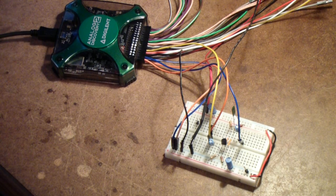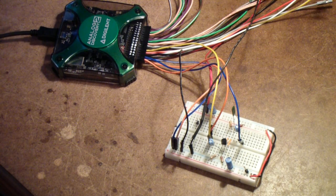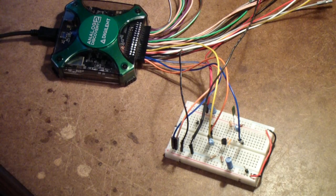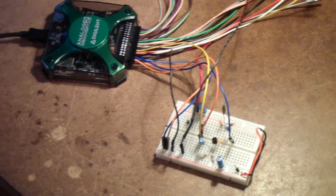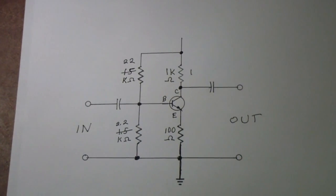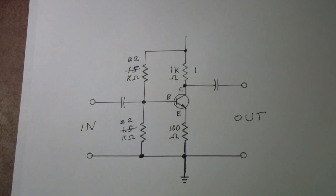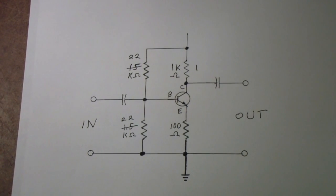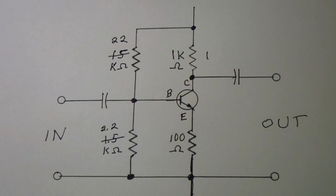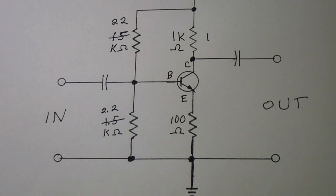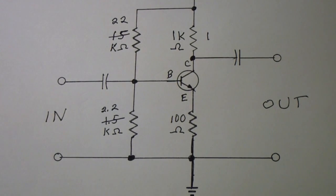On the breadboard is the circuit we built last time, and above it to the left is the analog discovery 2. You may recall we built it from this circuit, and I have made a couple of additions and a couple of changes to this circuit in the meantime, and I've also redrawn it so that it might be a little easier given all of the busyness of the last diagram.